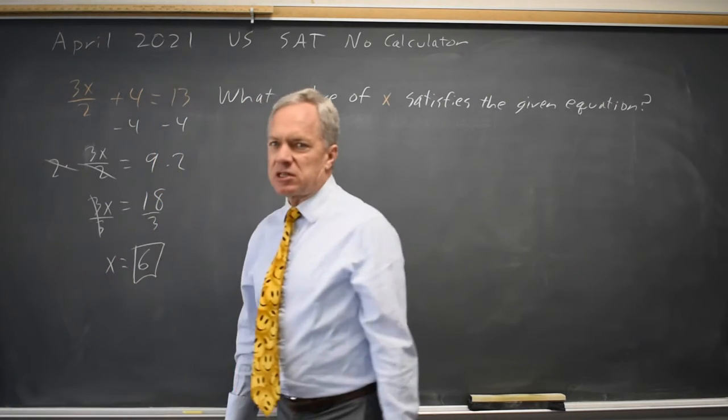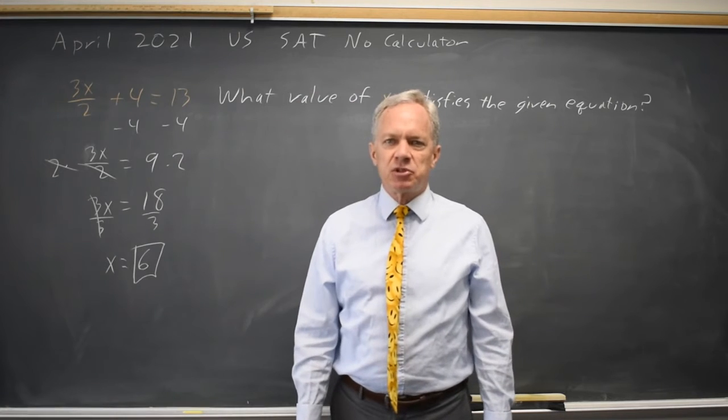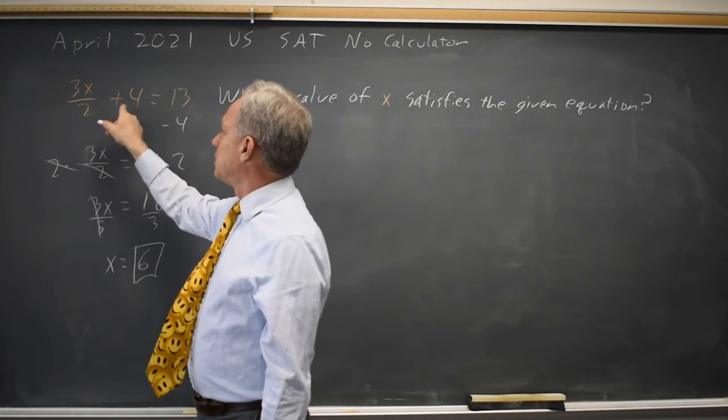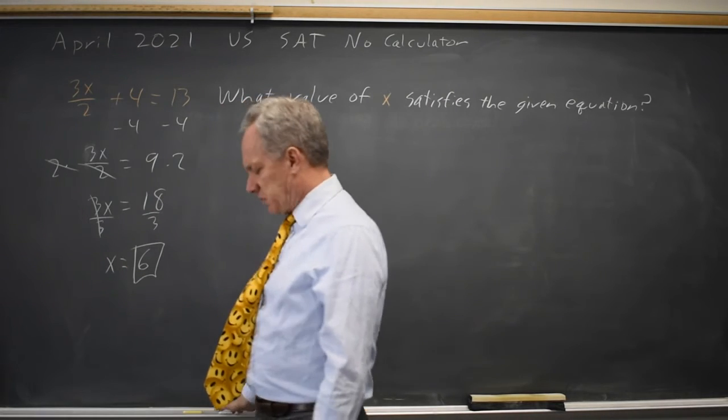The value of x that satisfies the equation is x equals 6. And if we try that, 3 times 6 is 18, half of 18 is 9, 9 plus 4 equals 13. That does, in fact, work.